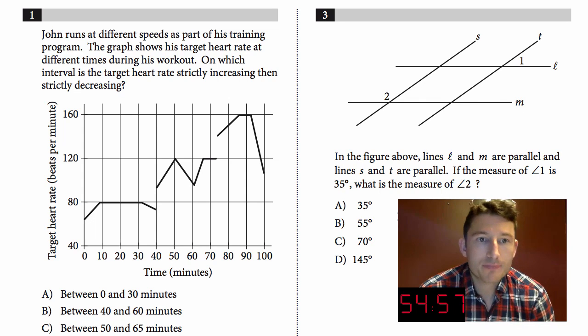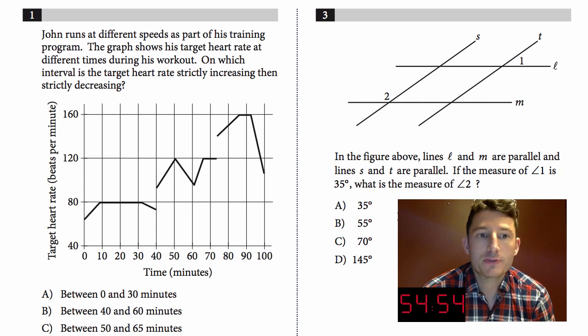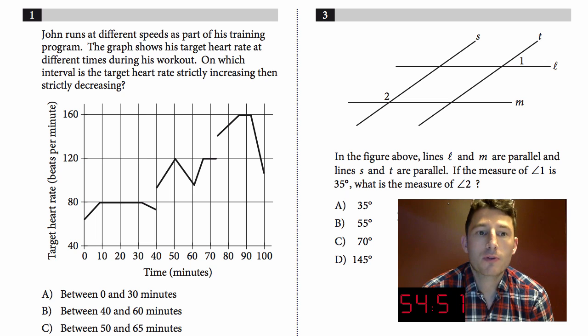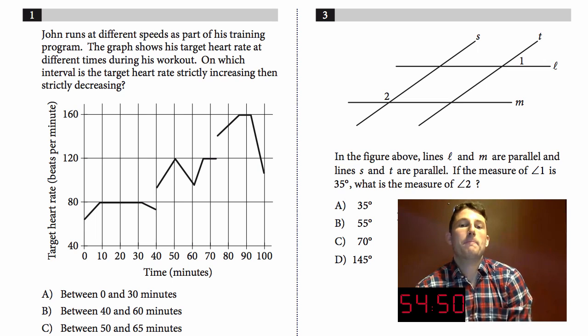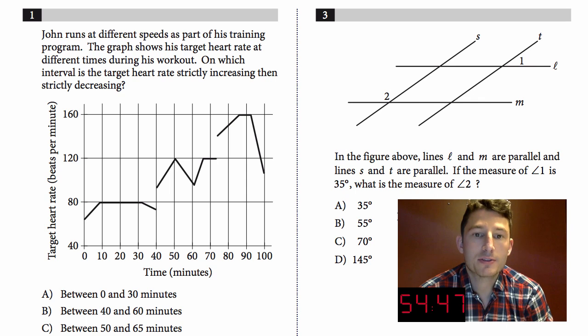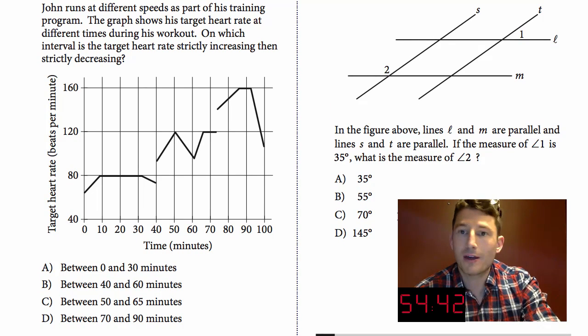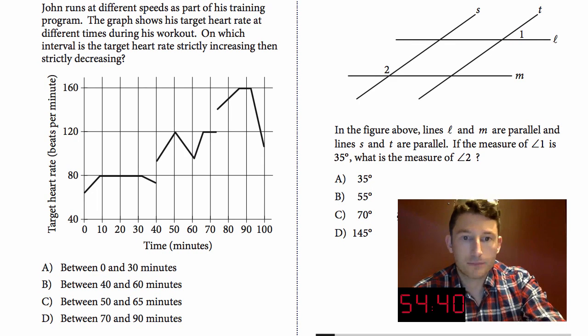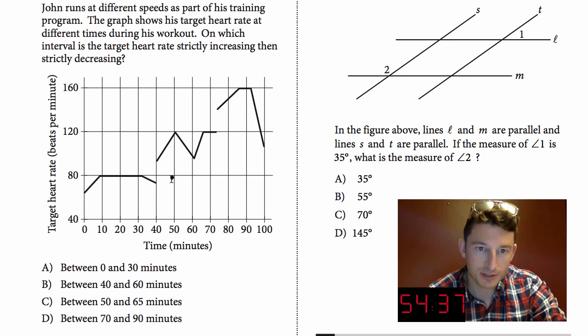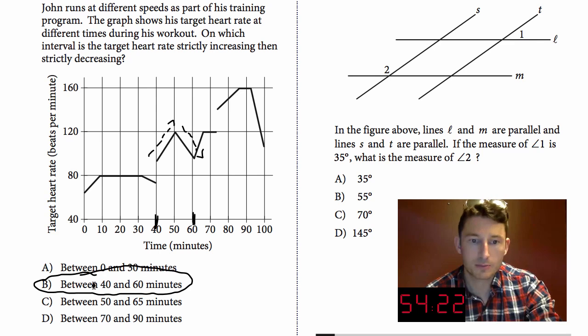Number one: John runs at different speeds as part of his training program. The graph shows his target heart rate at different times during his workout. On which interval is the target heart rate strictly increasing then strictly decreasing? We're looking for strictly increasing then strictly decreasing. On the left side it says heart rate, so I think it's pretty easy to see it's going up there and then it's going down there, and that's from 40 to 60. Choice B. You're done. Let's move on.